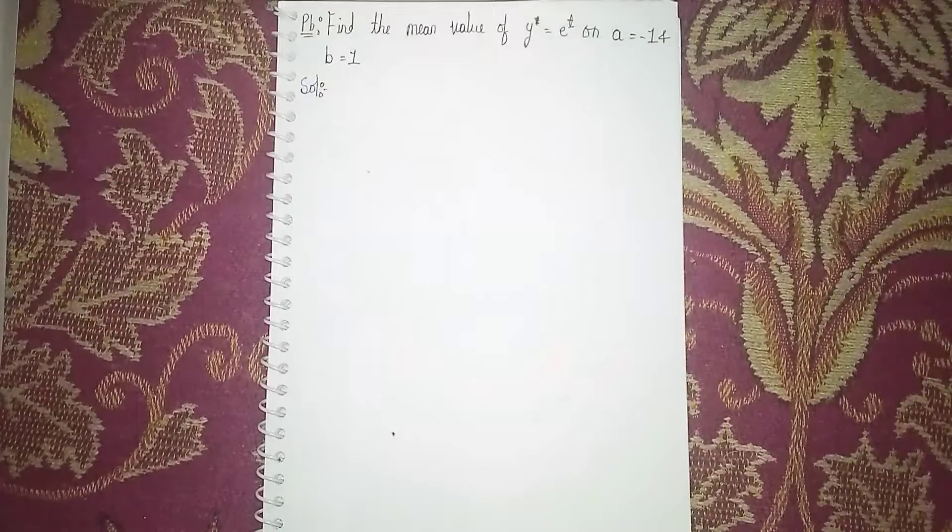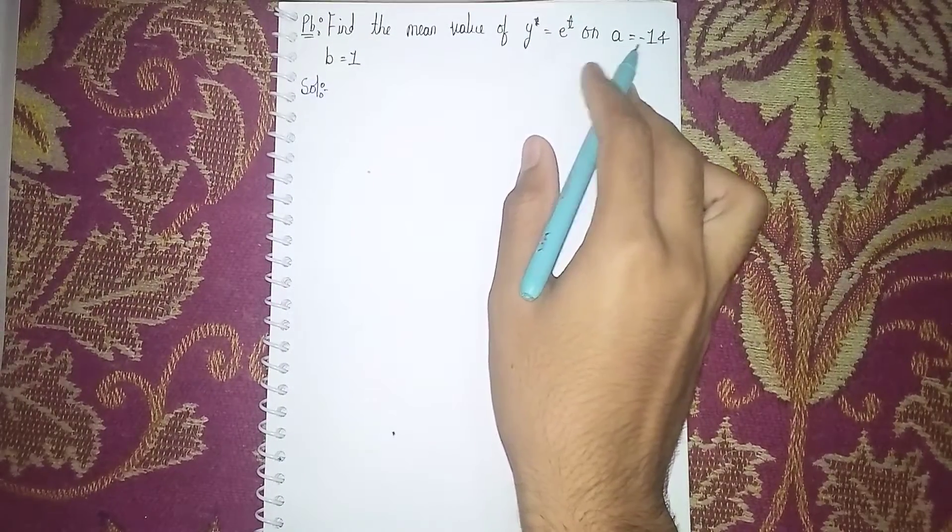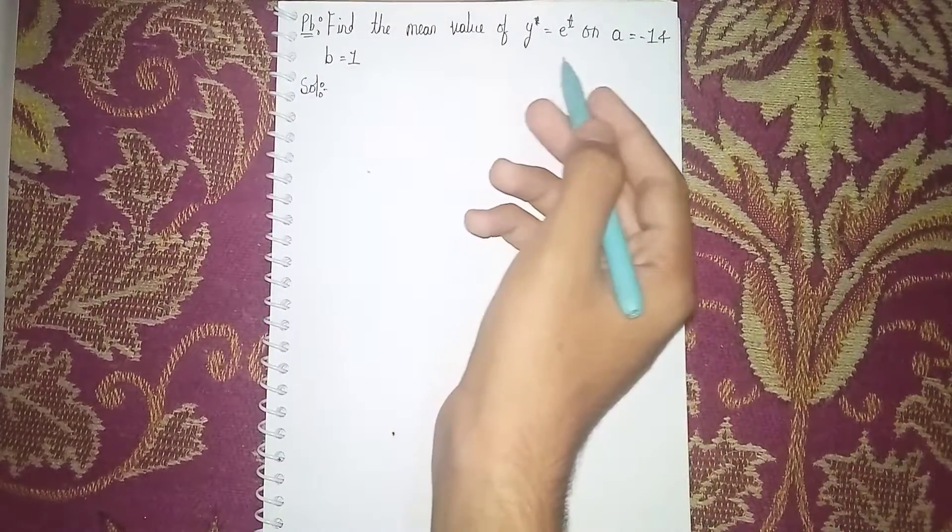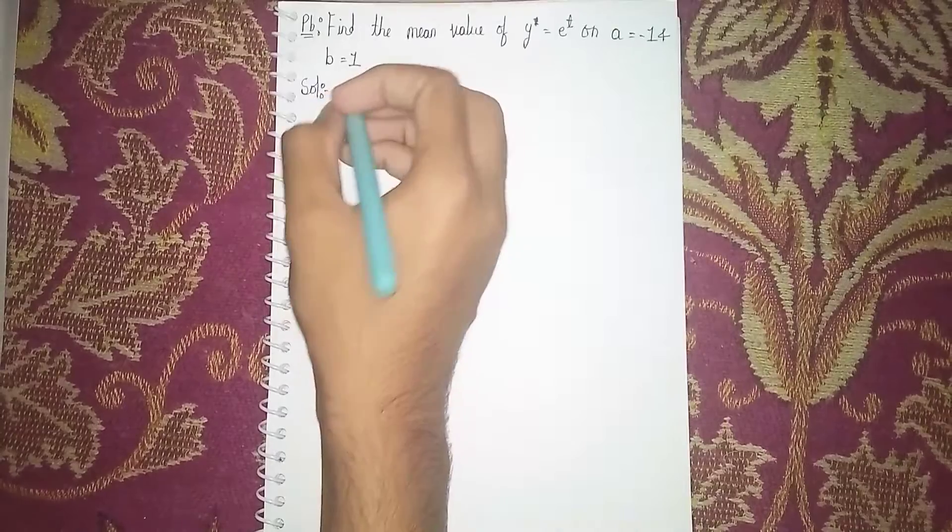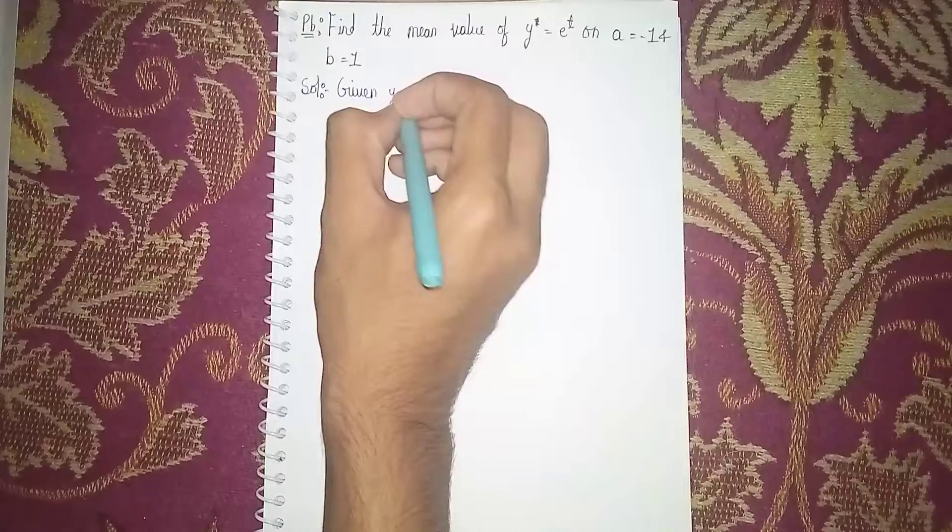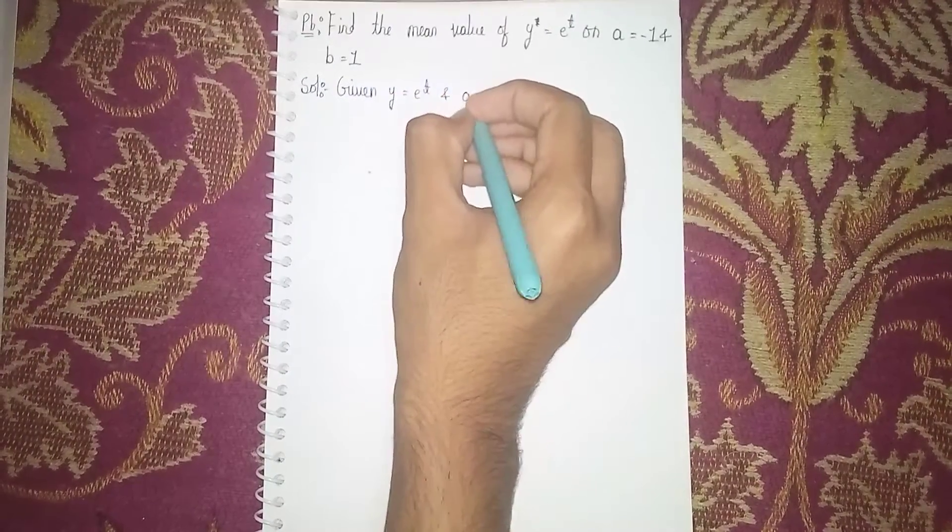Hello, welcome back to my channel. Today's question: find the mean value of y equals e power t on a equals minus 1 and b equals 1. We're trying to find the mean value of this function. First, given: y equals e power t, and a equals minus 1 and b equals 1.